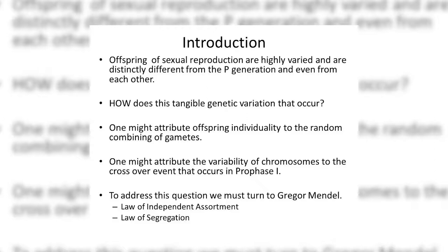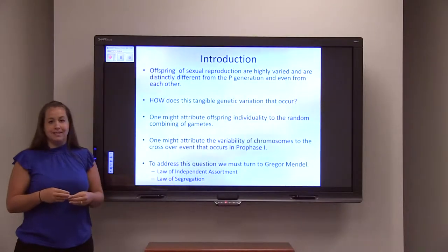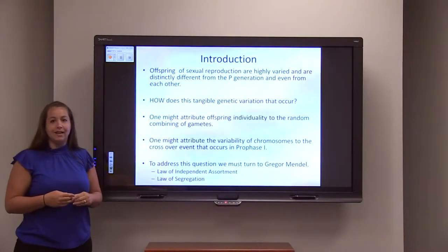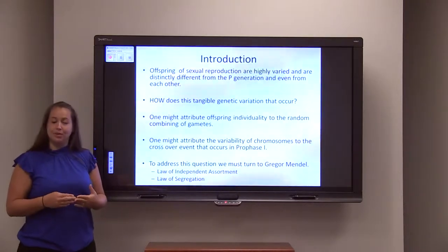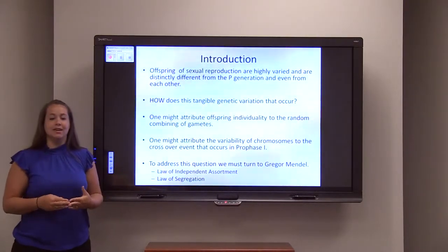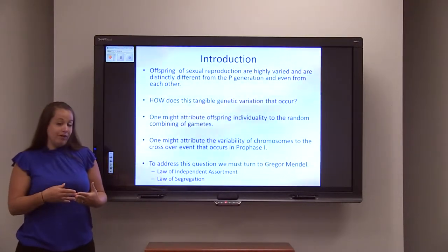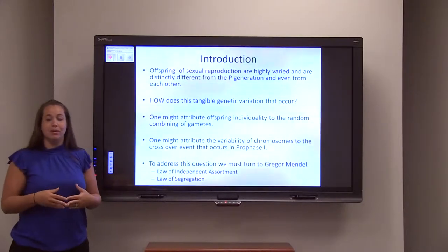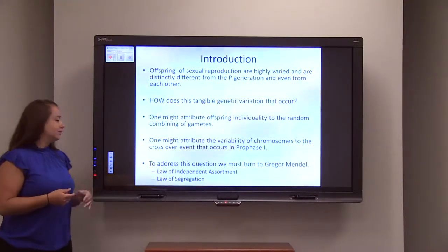The first is the law of independent assortment and the second is the law of segregation. These laws are what we're going to investigate today, and by the end of our discussion we'll really understand why genetic variability results and why it's so important in the propagation of the species.